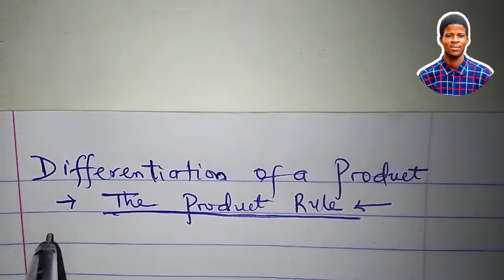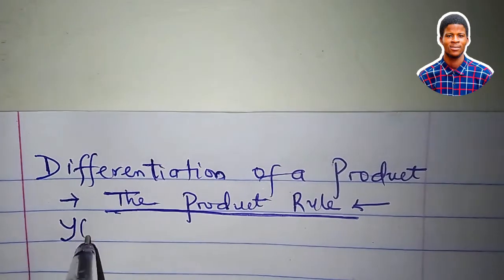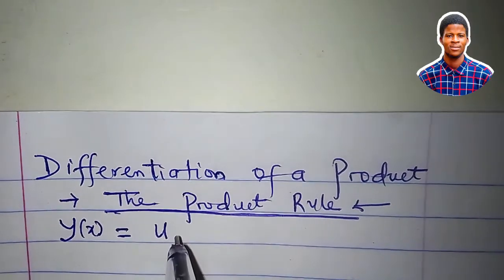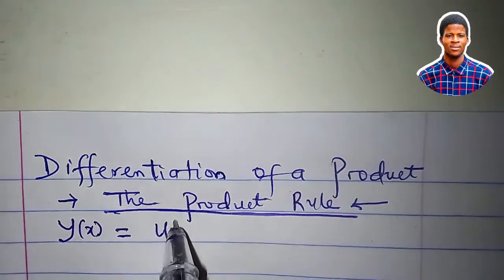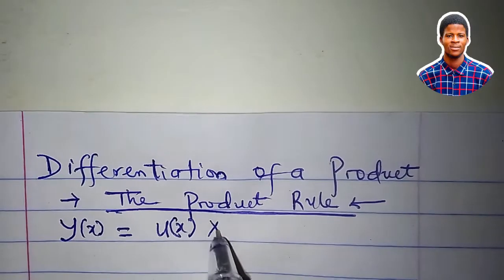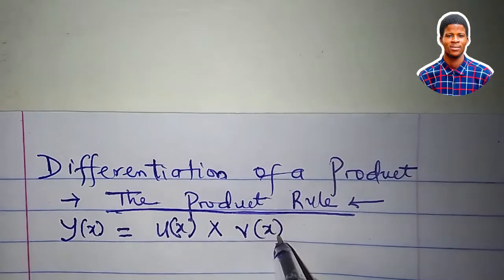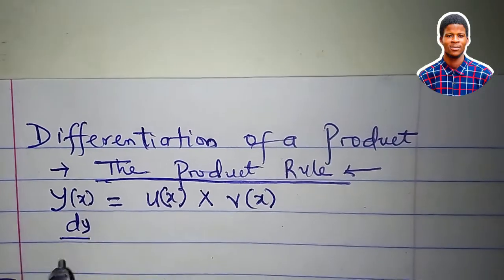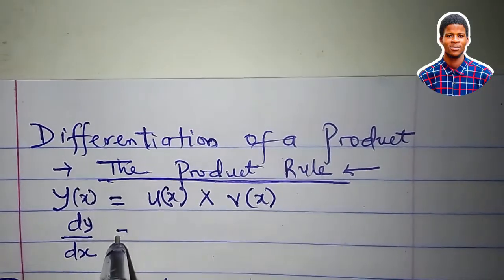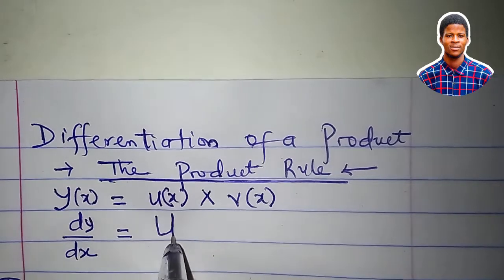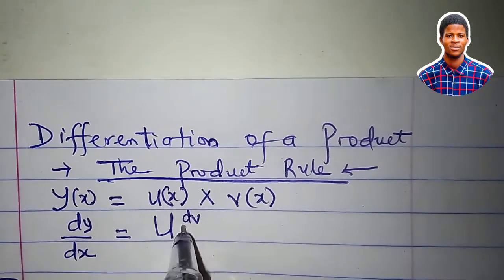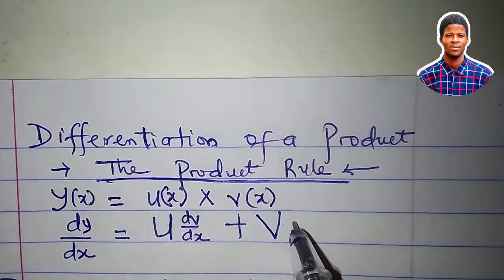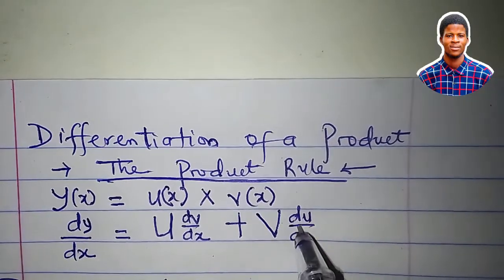Let us state the rule. If y, which is a function of x, is equal to the product of two functions, u, a function of x, and v, which is also a function of x, then dy/dx is equal to u times dv/dx plus v times du/dx.